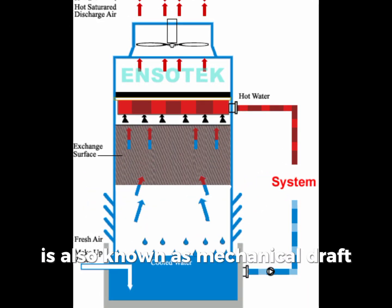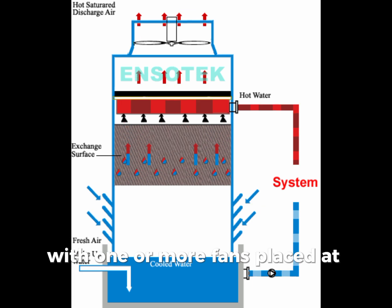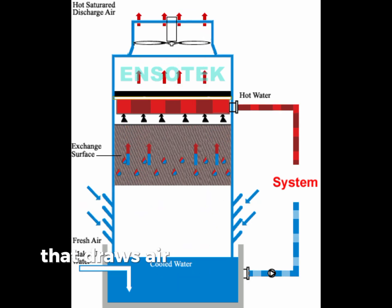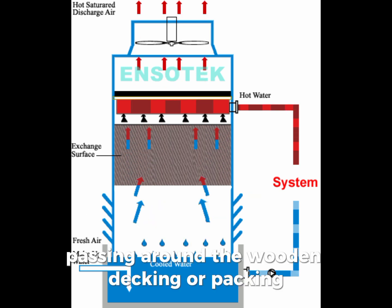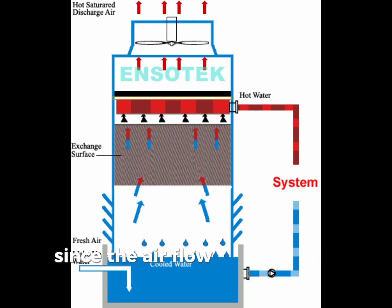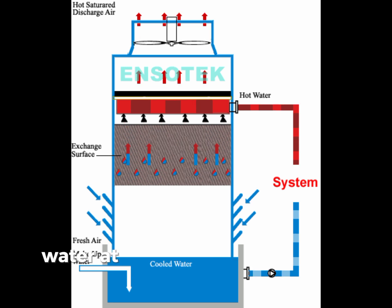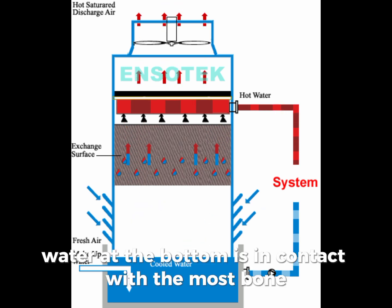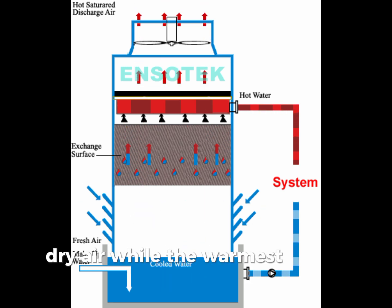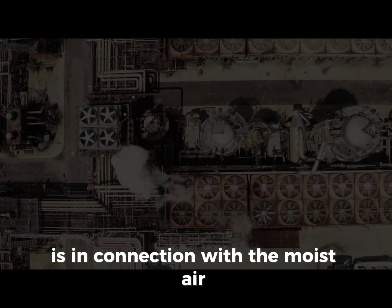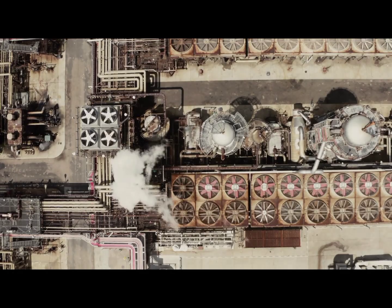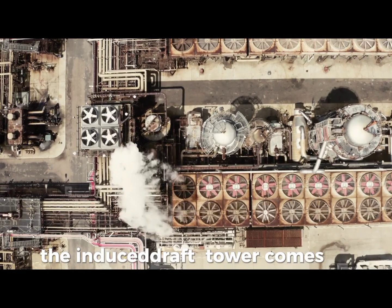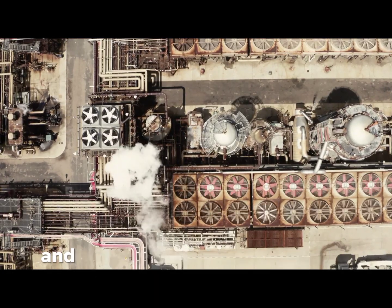An induced draft cooling tower is also known as a mechanical draft tower, with one or more fans placed at the top of the tower that draws air upwards, facing the outward flow of water passing around the wooden decking or packing. Since the airflow is counter to the water flow, the most chilled water at the bottom is in contact with the driest air, while the warmest water at the top is in contact with the most moisture, resulting in increased heat transfer efficiency.